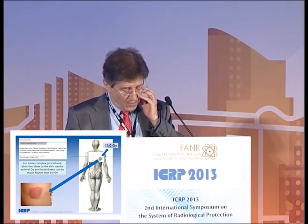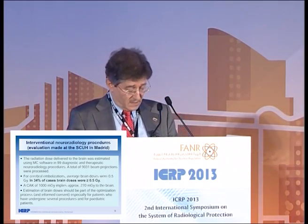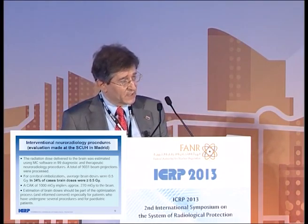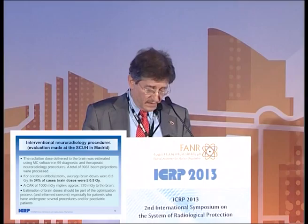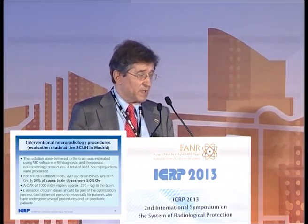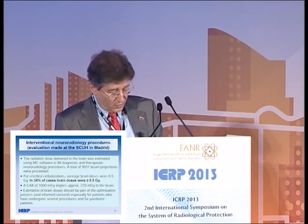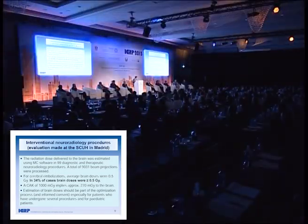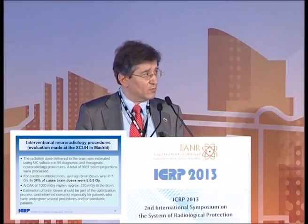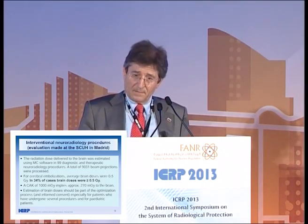For interventional neuroradiology, we did a similar exercise with a more selective calculation. We processed more than 9,000 series of images individually, distributing fluoroscopy runs across brain areas. In our normal practice — as a university hospital with quite complex cases — 34% of brain procedures had doses to the brain higher than 0.5 grays. Approximately every 1,000 milligrays at the entrance of the head in these procedures involves around 207 milligrays to the brain, taking into account collimation and beam quality differences.